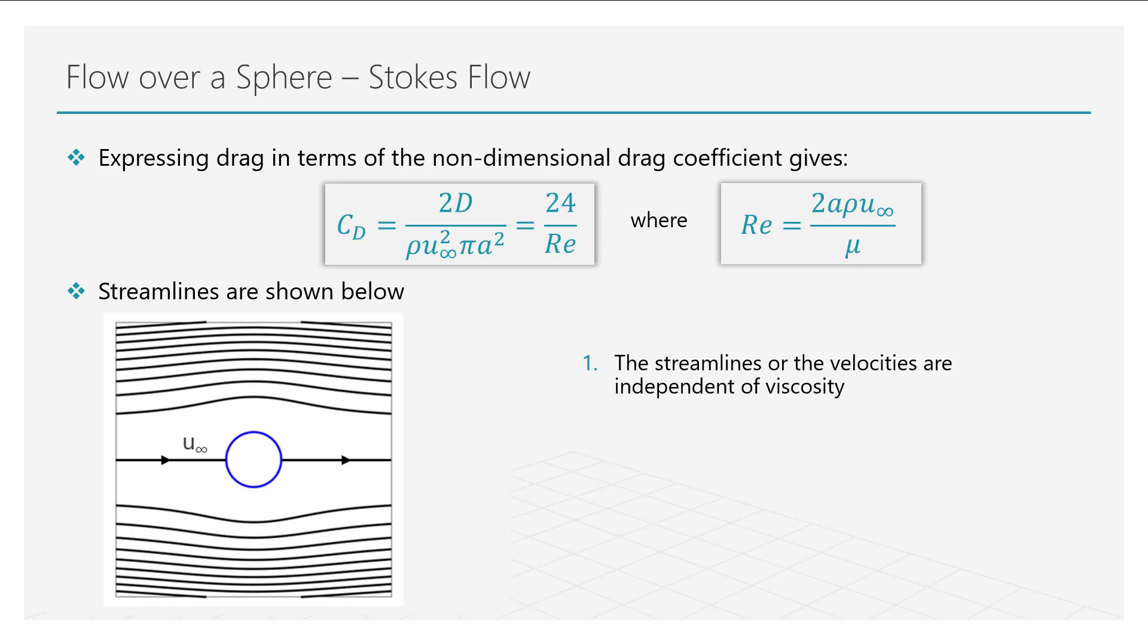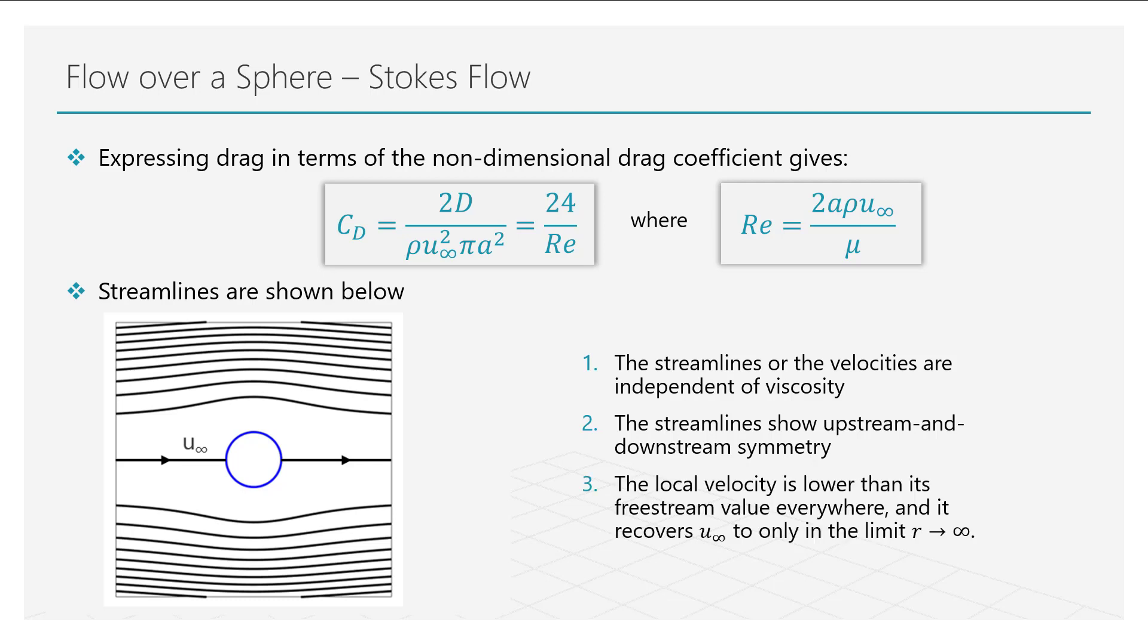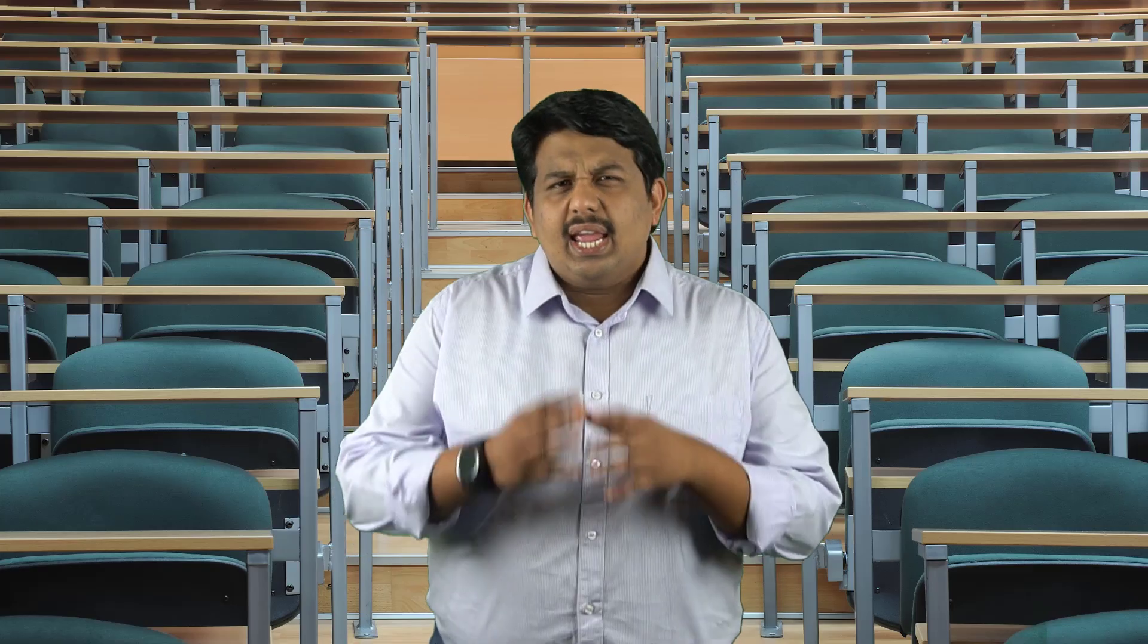The streamlines show an upstream-downstream symmetry. This observation basically means that there is no wake of the sphere. This has to do with the fact that we ignored the inertial terms. The velocity around the sphere is less than the freestream velocity. The freestream values are recovered only at very large distances, i.e. as radius tends to infinity. In other words, the presence of the sphere has a global impact on the fluid and not just in the vicinity of the body.